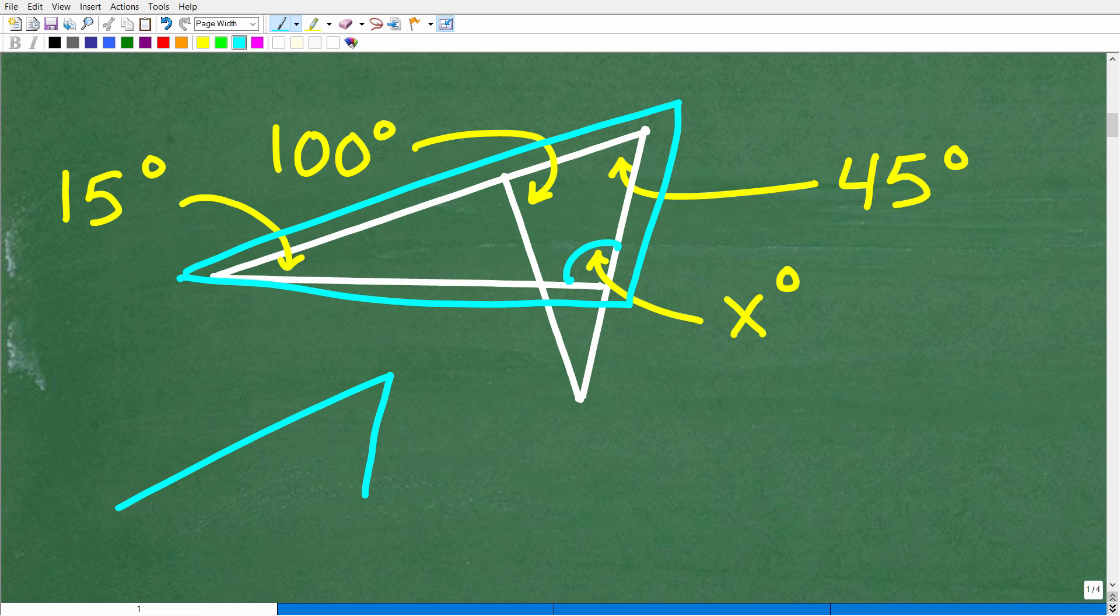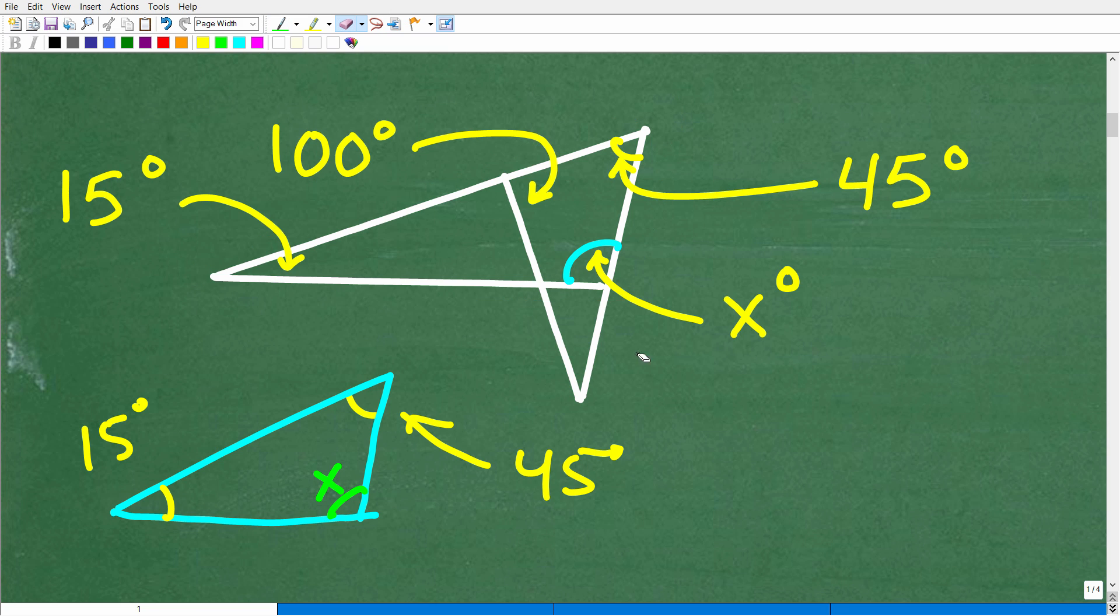Okay. So I'm going to kind of draw it right here. So this is effectively what we have, right? So we have 45 degrees for this angle right here, this is 45 degrees. And then this one right here is 15 degrees and angle X is actually this right here. Okay. So let me go ahead and just erase this so we can kind of see this is the angle that we're looking for right there and it's part of this triangle.